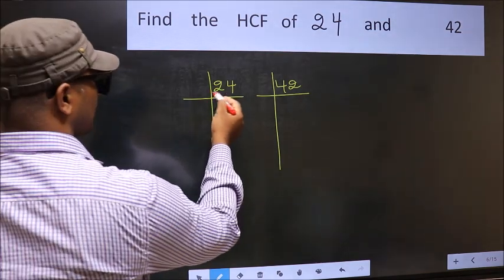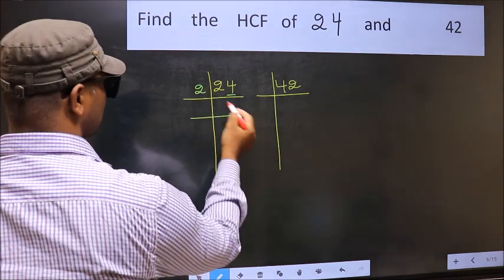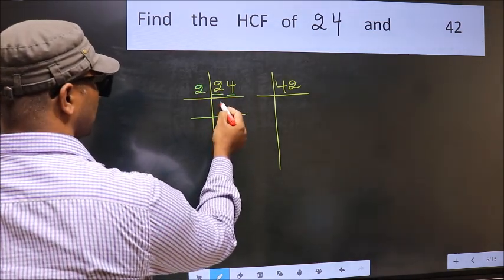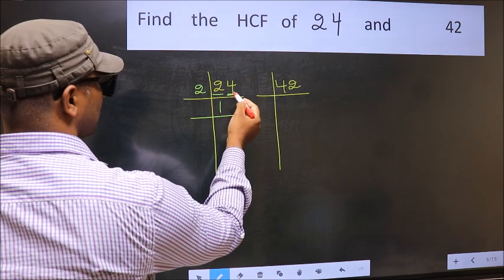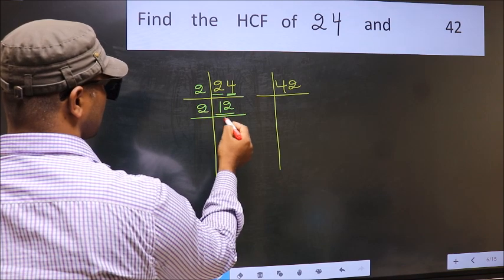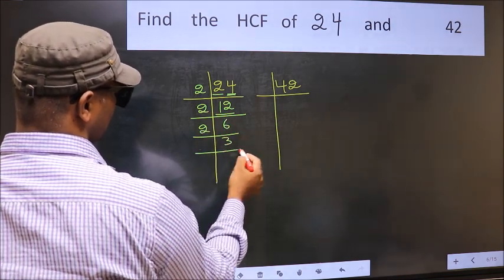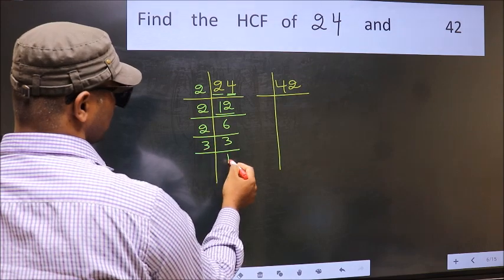In this number, last digit is even, so take 2. First number 2, when do we get 2 in the 2 table? 2 times 1 is 2. The other number 4, when do we get 4 in the 2 table? 2 times 2 is 4. Now 12 is 2 into 6 is 12. 6 is 2 into 3 is 6. 3 is a prime number, so 3 times 1 is 3.